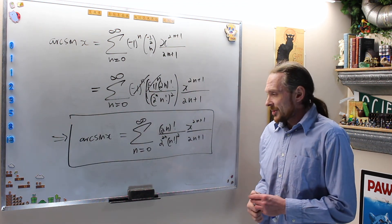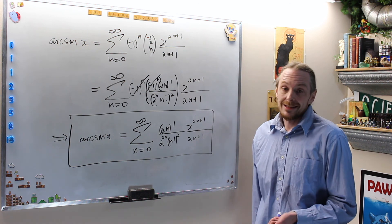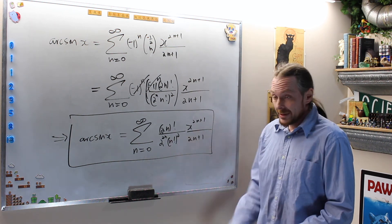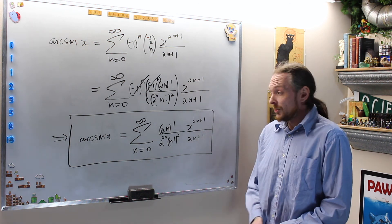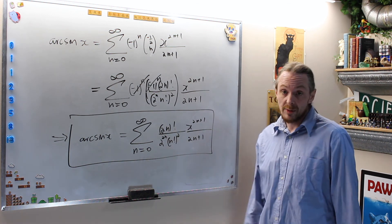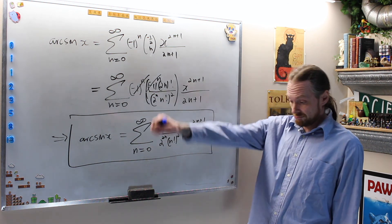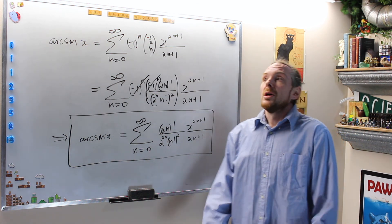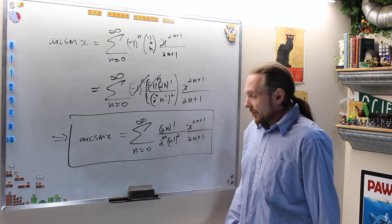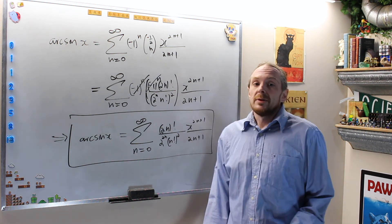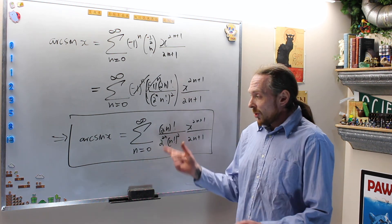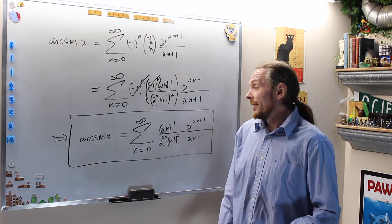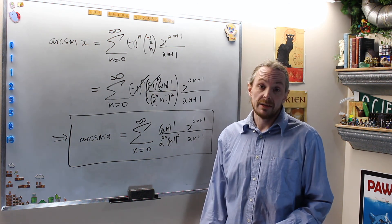This is the power series representation for arc sine. You can find the radius and interval of convergence in the exact same way. Please subscribe below and click the notification bell if you want to see more videos like this, and I'll see you in the next video.